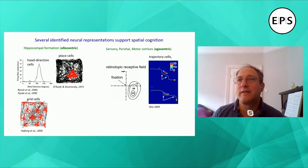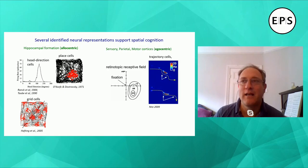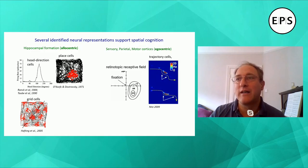In freely moving rodents, we know that there are neurons in and around the hippocampal formation that encode our location and orientation relative to the environment, such as place cells and grid cells, which are tuned to our environmental location, usually irrespective of which direction we're facing. And then there are head direction cells, which are tuned to the direction that we're facing, irrespective of where we are.